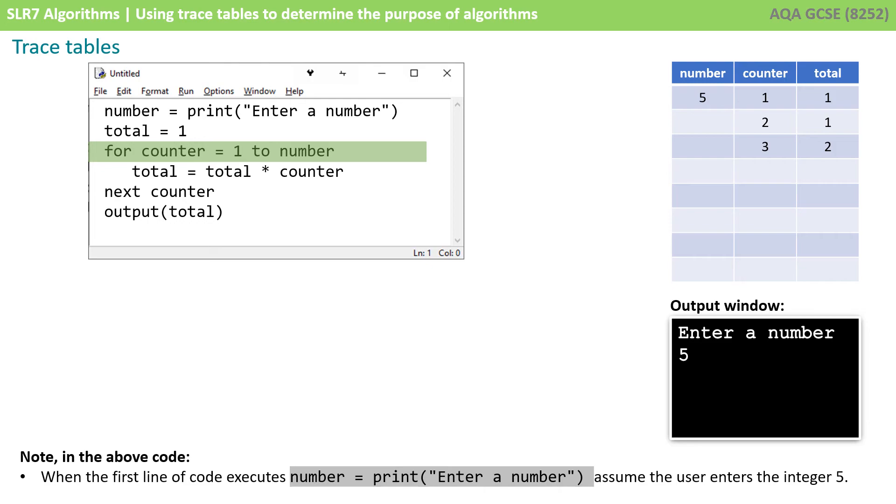We reach the end of the for loop and we increment counter from two to three. We go back to the start of the for loop. Total now becomes equal to the current total, which is two, times the value of counter, which is three. Well, two times three is six, and that gets written back in total. And we hit the end of the for loop and increment the value of counter from three to four. Notice we're very carefully stepping through the algorithm methodically, one line at a time, as if we were the computer program executing. Every time a variable updates, we change its value in the trace table by adding an extra row.